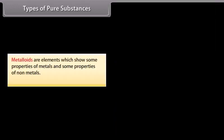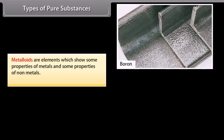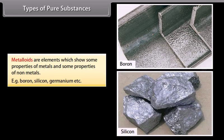Metalloids are elements which show some properties of metals and some properties of non-metals, like boron, silicon, germanium, etc.